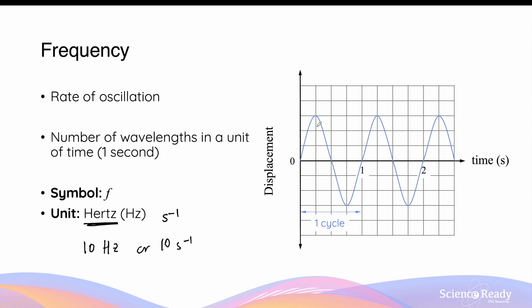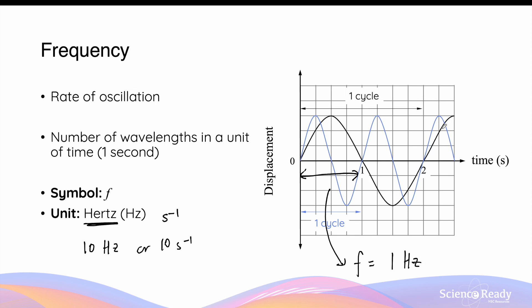In this example, the blue wave completes one wavelength in a span of one second, meaning the frequency of this wave is one hertz. For the black wave, in one second it is unable to complete one wavelength — in fact, it only completes half of its wavelength, and it takes two seconds to complete one wavelength. So the frequency of this black wave is equal to 0.5 hertz, meaning only 0.5, or half of the wavelength, passes through a point every second.